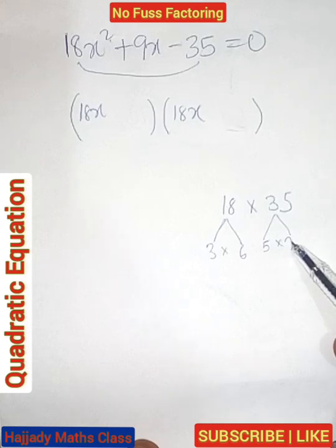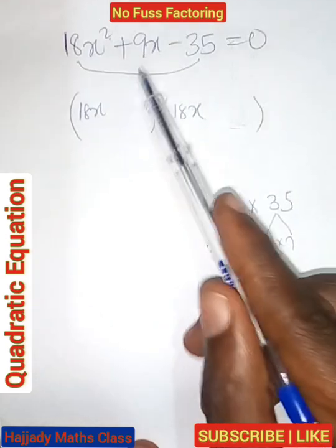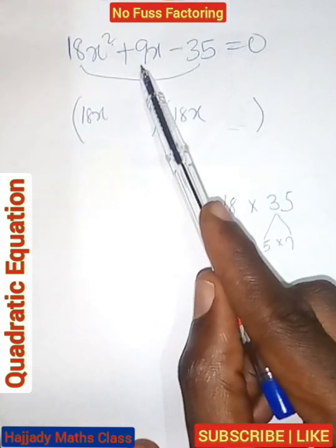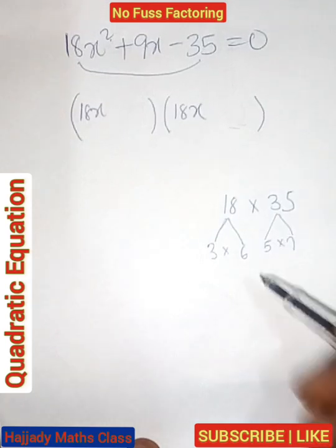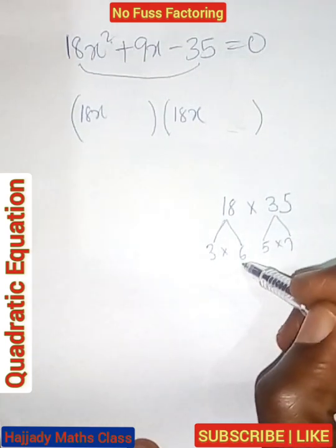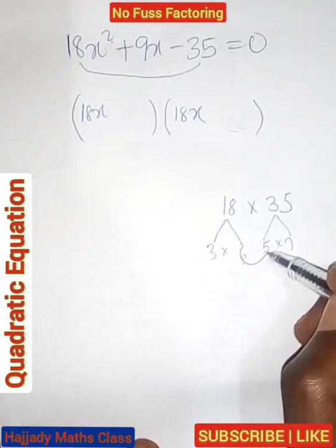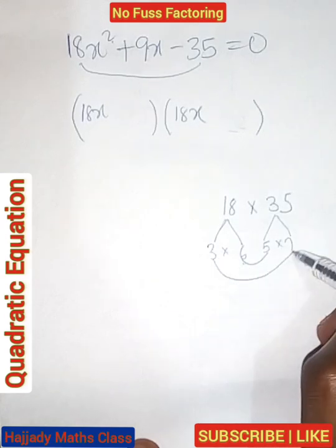Our objective is this: we are looking for two values such that when it is being added together, it gives plus 9. Now let's pick these two together, multiply this, multiply this.